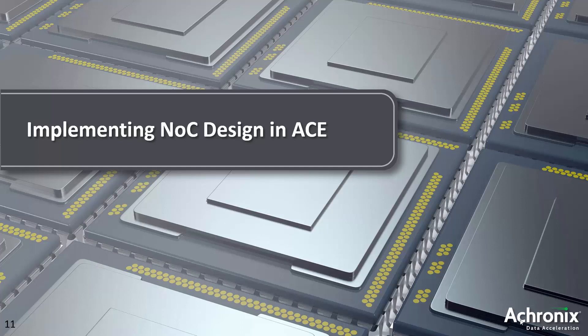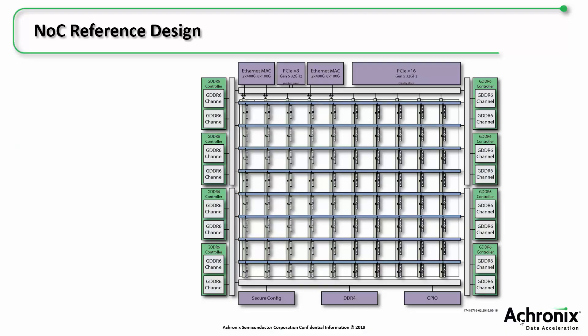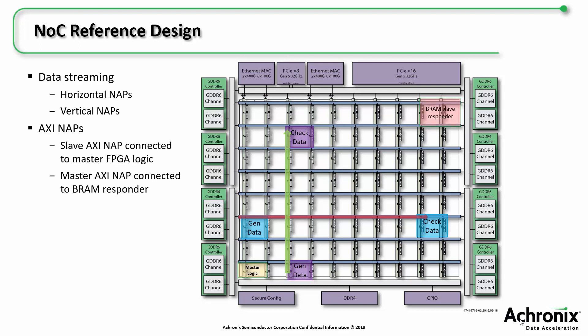Now you know about instantiating NAPs and how to best consider placement and types of NAPs. Let's dive into a real implementation and see some tips and best practices so you can get the most out of using NOC in your design. The NOC reference design includes data streaming NAPs: two horizontal NAPs, one transmitting and one receiving; two vertical NAPs, again one transmitting and one receiving; and finally, a pair of AXI NAPs in opposite corners with master logic in the southwest communicating with slave logic in the northeast.